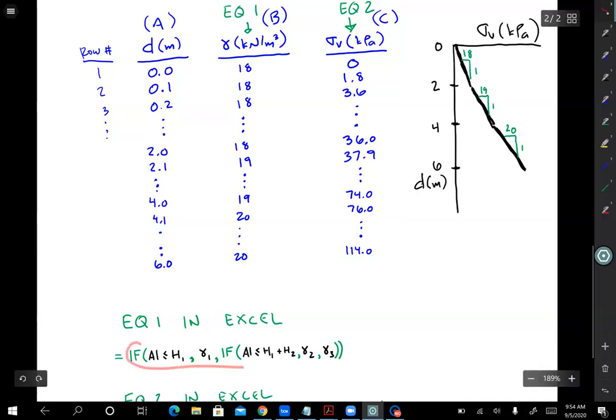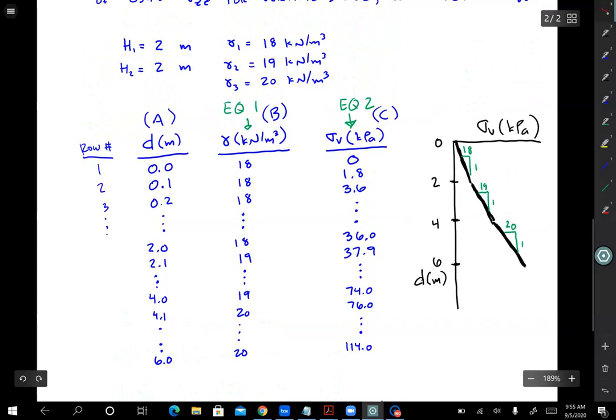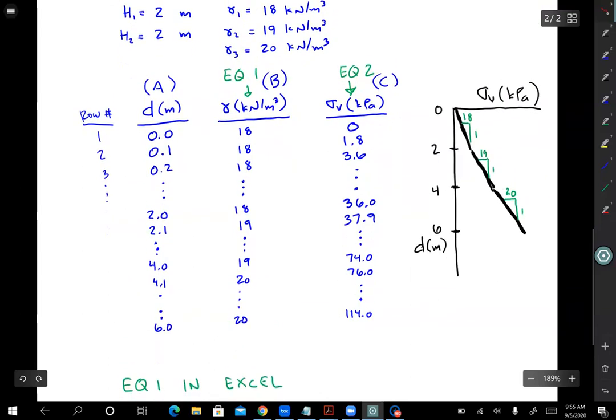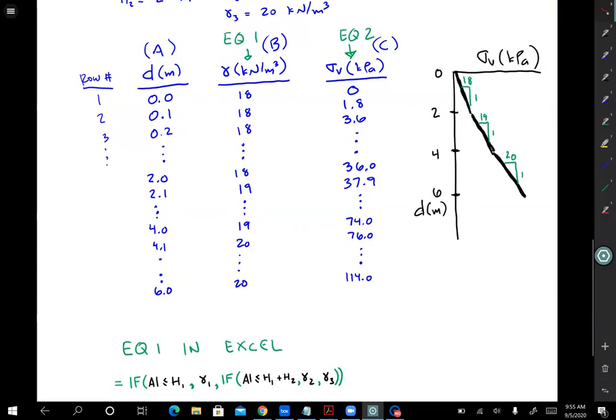So anyway, if you plug this equation into these cells here, these are the unit weights that you would get. So at a depth of two, you're right at the interface between layer one and two. I'm using a less than or equal than sign, so you would return gamma one, and then it transitions to gamma two, and then when you get past four, it transitions to gamma three. As we recall, it's 18, 19, 20 kilonewtons per meter cubed for those unit weights.